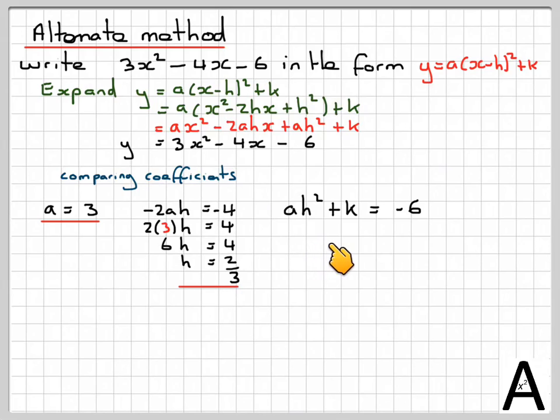Last part, ah squared plus k is equal to minus 6. We know a and h, so we'll substitute them in. So we've got 3, bracket 2 over 3 squared plus k is equal to minus 6. So that's 3 times 4 ninths, 2 squared and 3 squared, plus k is equal to minus 6.